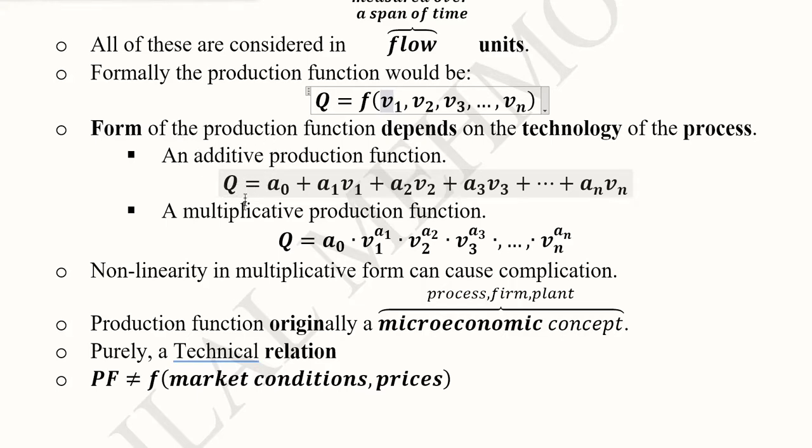Mathematically speaking, it can look like an additive production function or a multiplicative production function. As the name goes, it should have some additive terms. This is the intercept. This is the first input v1, and this is a1 its coefficient or slope parameter. This is the slope parameter of the second input v2, and this holds for all remaining inputs up to the nth input vn. This is an additive form of the production function.